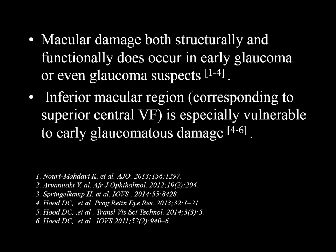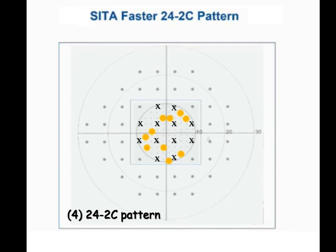Recently it was noticed that macular damage — both structural and functional — occurs in the early stages of glaucoma, even in glaucoma suspects. Structurally, the inferior macular region, which corresponds to the superior visual field central part, is especially vulnerable in early glaucoma. This led Humphrey to introduce a new system called the SITA Faster 24-2C pattern. The X marks represent the original 12 points from the previous 24-degree test; these are omitted and replaced by the points shown in yellow, which correspond to changes known to occur in early glaucoma.